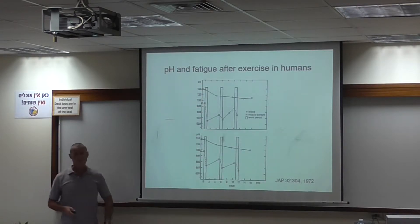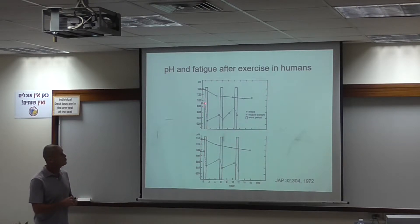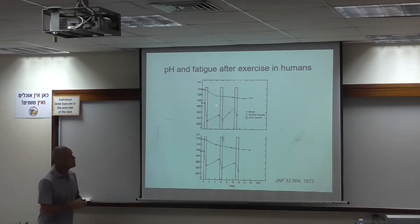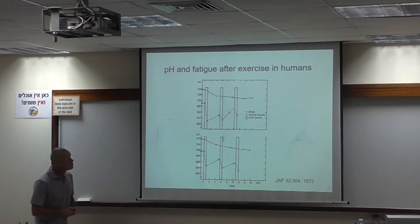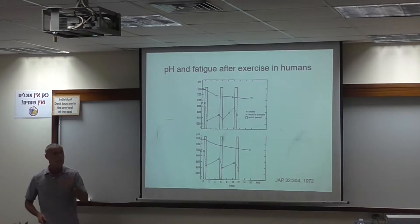Here is a classic study by Hermansen and Osnes in the early 70s, where they had subjects perform repeated exercise bouts to fatigue, and they took muscle biopsies before and after the exercise bouts. These squares indicate the muscle pH, which is close to 7 at rest, and we see that after a bout of cycling exercise to fatigue, the pH decreases to about 6.4. This is repeated several times, and each time we see pH is about 6.4. These results present correlative data that fatigue is associated with a low pH of about 6.4. But we need a mechanism.